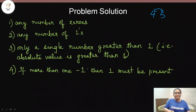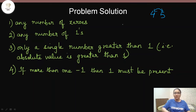Additionally, if the array contains more than one -1, then 1 must also be present in the array, because (-1)×(-1) = 1. So that is another necessary condition for the array to be considered closed under multiplication.